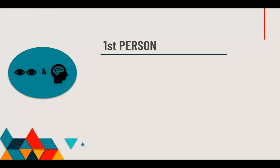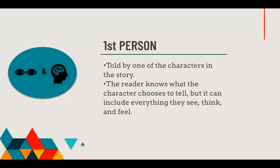Let's start with first person point of view. This means that the story is told by one of the characters in the story — somebody that is participating in the action is the one telling the reader about it. The reader knows what the character chooses to tell. The character is the one speaking in the story, and it can include everything they see, think, and feel, because they're the ones telling you. It just depends on the story whether we know all of those or only part of it — that's an author's choice.